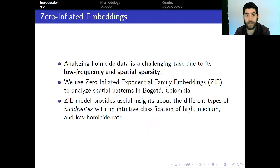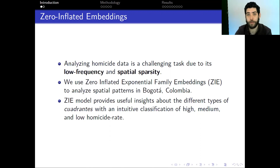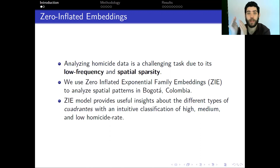With this in mind, in this work we used zero-inflated exponential family embeddings to analyze spatial patterns of homicide occurrences in Bogota, Colombia, and we found useful insights about the different types of cuadrantes — spatial units used by the police to plan their patrol routines — with an intuitive mapping of high, medium, and low homicide-grade cuadrantes into our embedding space.